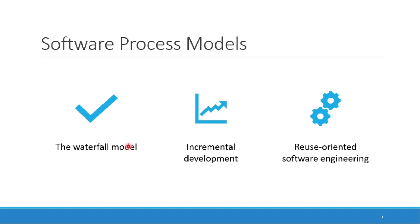Software process models. We have the waterfall model. The waterfall model is just like a real-life waterfall — it is a downward approach. Once you complete one step you will not go back. This is a plan-driven model. There are separate and distinct phases with no overlapping phases. You have to plan first, and then you can develop your project.